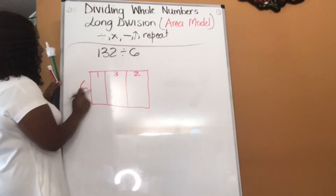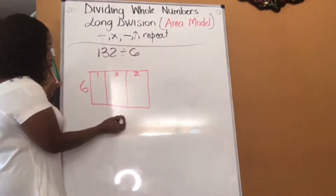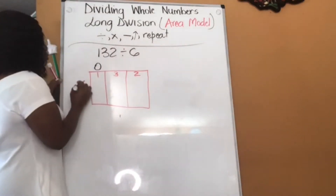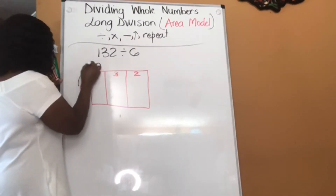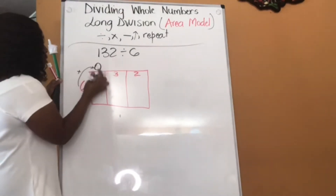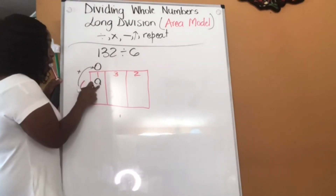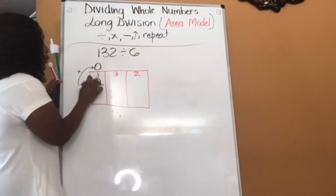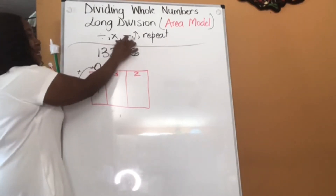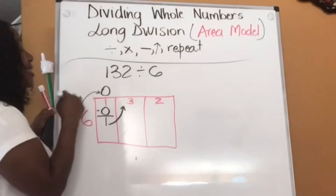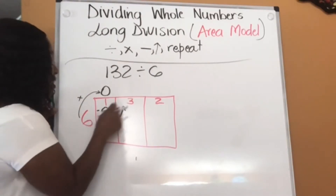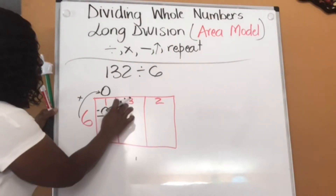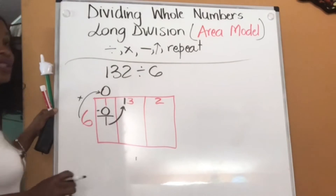Divide. How many sets of 6 can you get from 1? If I have 1, can I get 6 from it? No. So I'm going to put 0 up there. The next step is to multiply — you're multiplying the digit on the side by the digit you write on top. So 6 times 0 is 0. It goes underneath the 1 because you just divided the 1. Next step is to subtract: I have 1 and I'm giving away 0, I'm left with 1. Next step is to bring it across — this 1, I'm bringing it across to the 3, so this now becomes 13.